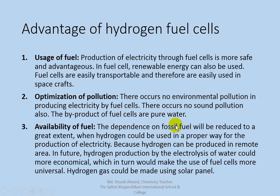Regarding availability: fossil fuels will be depleted one day, but hydrogen can be used properly for electricity production. Hydrogen can be produced even in remote areas. In the future, hydrogen production by electrolysis of water could become more economical, making fuel cell use more universal. Hydrogen gas can also be produced using solar panels. So hydrogen fuel can be found or produced everywhere through electrolysis of water, and can be used as fuel even in remote areas.